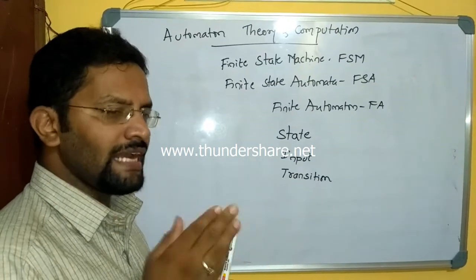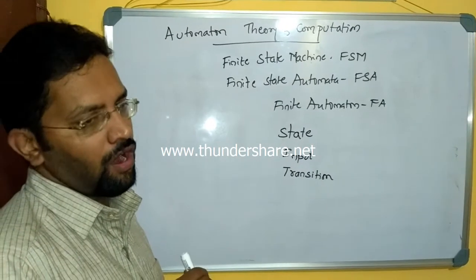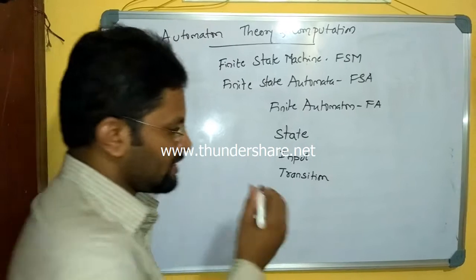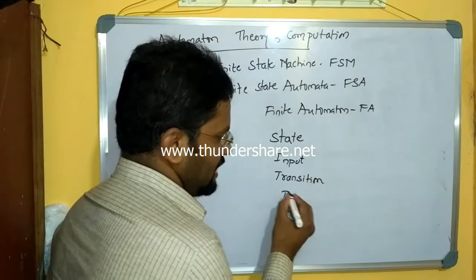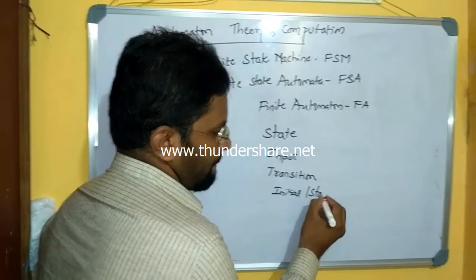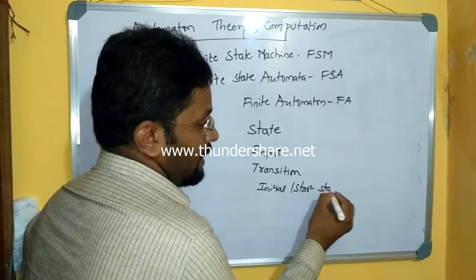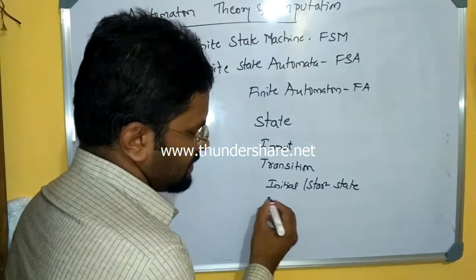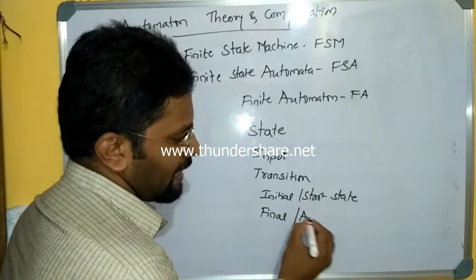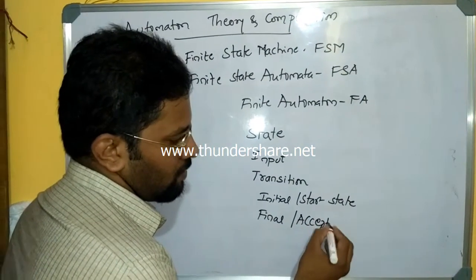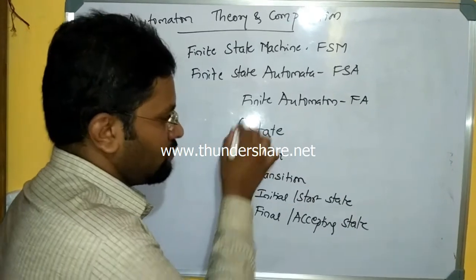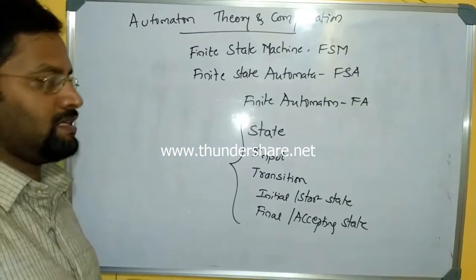At any point of time, an automata or machine should start — that is called the initial state or start state. Similarly, automata should stop at some point of time, so we say final state or accepting state. Whenever I talk about automata, these are the five things required to represent it.